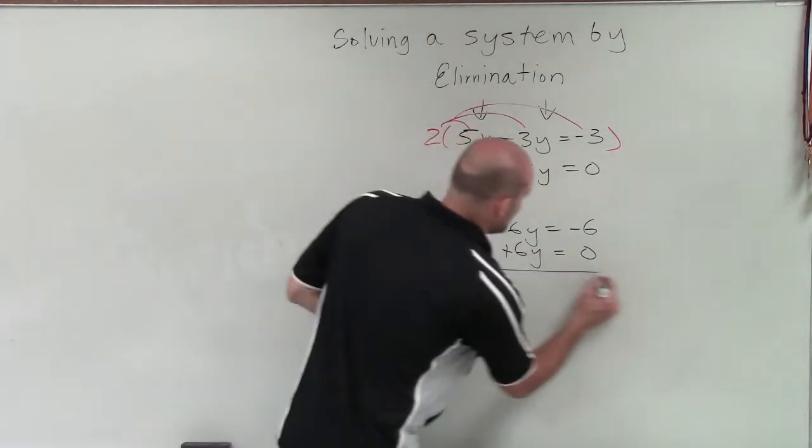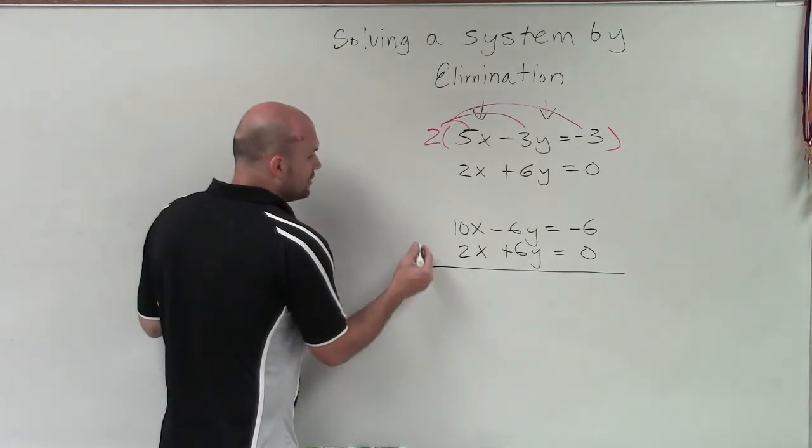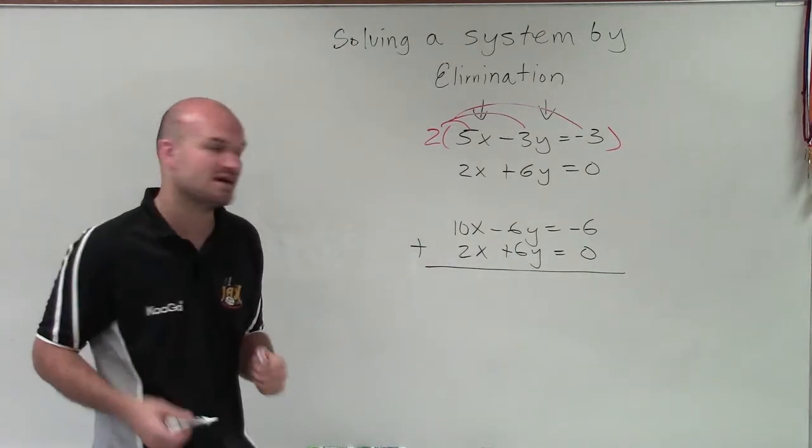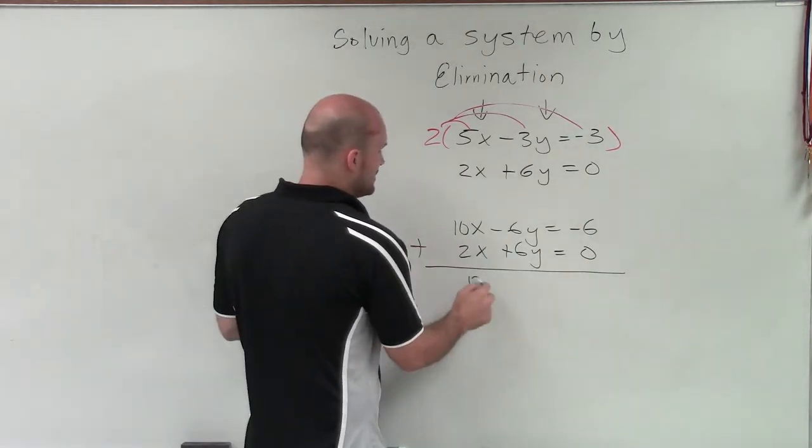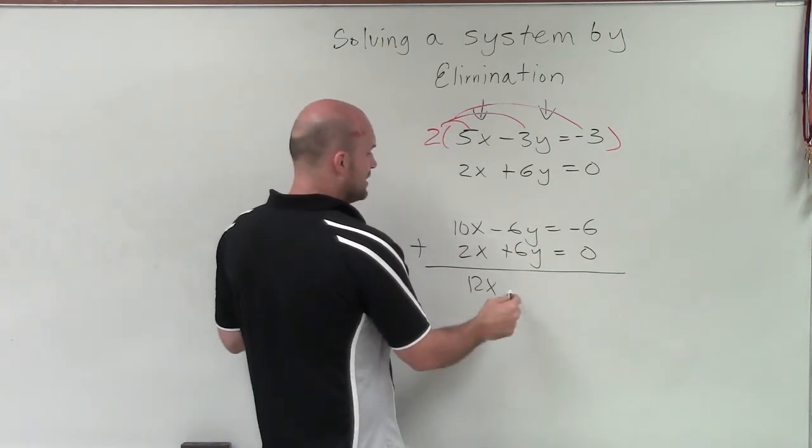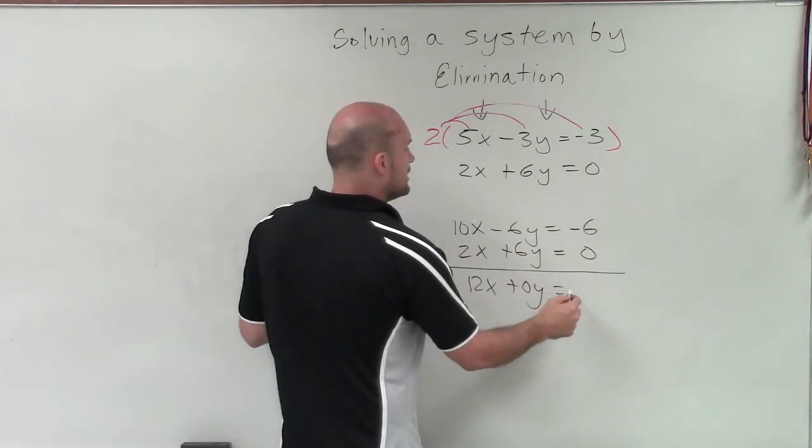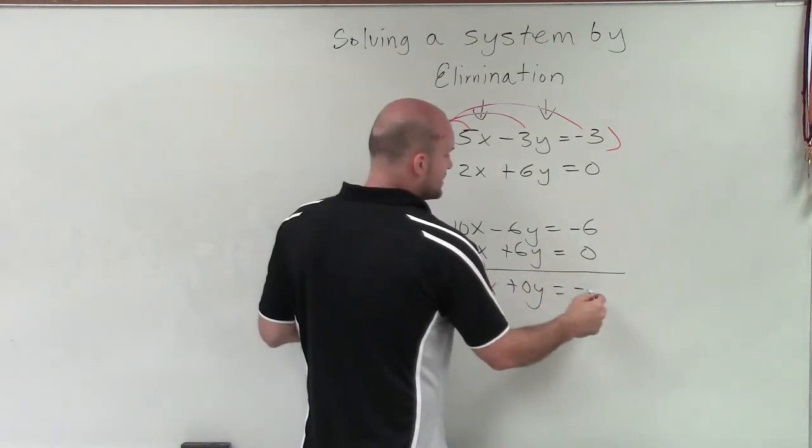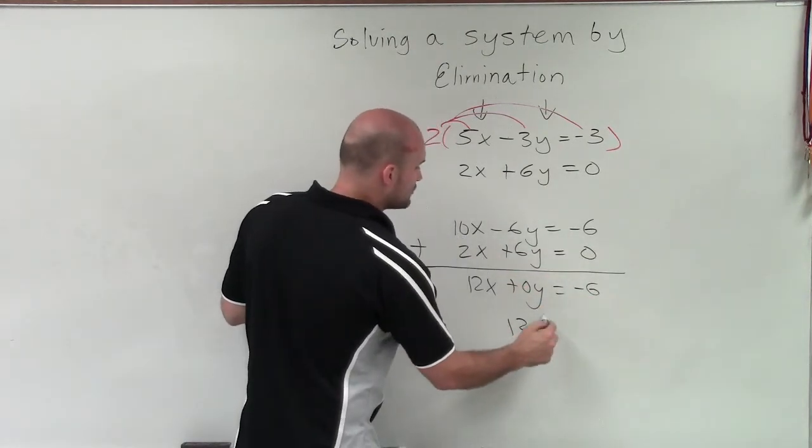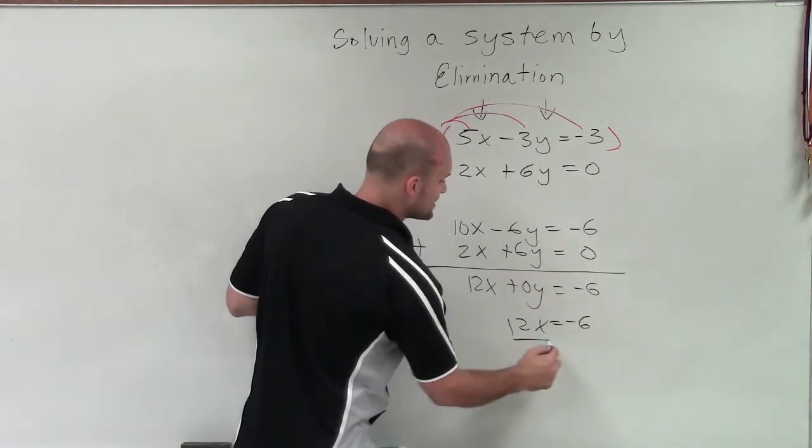So now, to eliminate my y variable, I just need to add the two equations. Well, 10x plus 2x is 12x. Negative 6y plus 6y is going to be 0y. And negative 6 plus 0 is negative 6. Therefore, I have 12x equals negative 6.